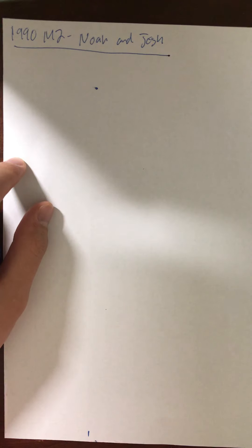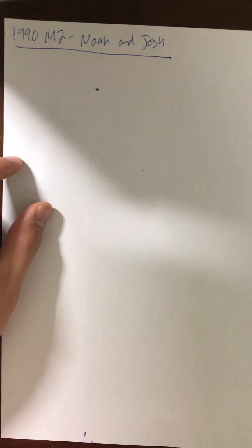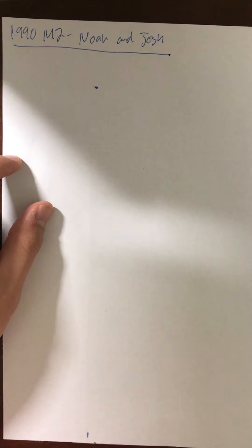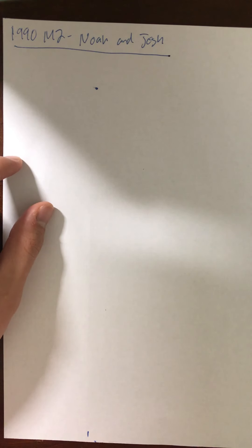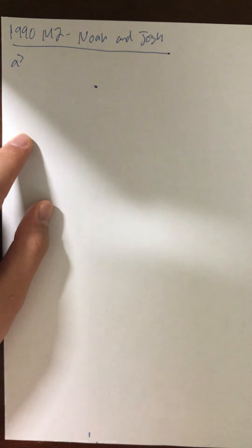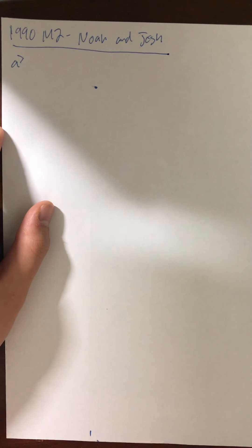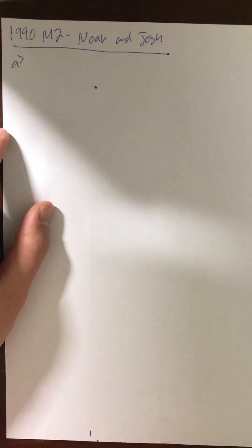Today we're going to be working on solving the 1990 M2 problem in the AP Physics exam. The problem first starts by stating that a block of mass m slides up the incline shown above with an initial speed of v-initial in the position shown. In part A, we have to figure out if the incline is frictionless, determine the maximum height H in which the block will rise in terms of the given quantities and appropriate constants.